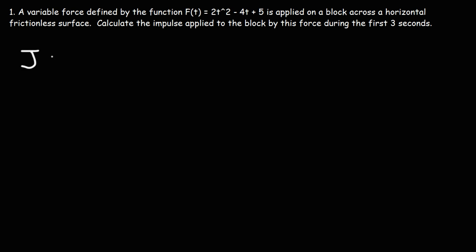Impulse, typically represented by the symbol J — sometimes you might see I for impulse — is equal to force multiplied by time, and this is also equal to the change in momentum. But now the force we're dealing with is not a constant force but a variable force, so we need to use calculus in this case.